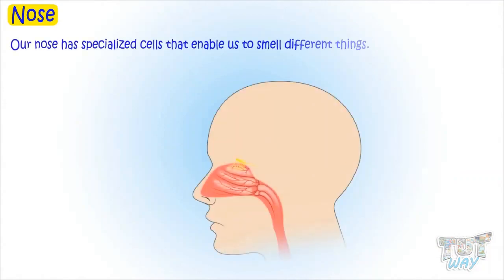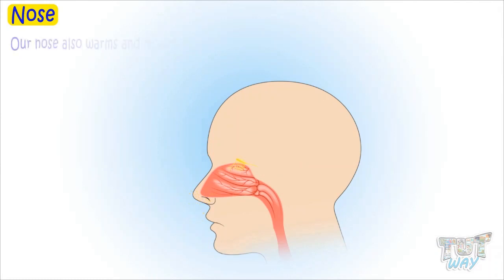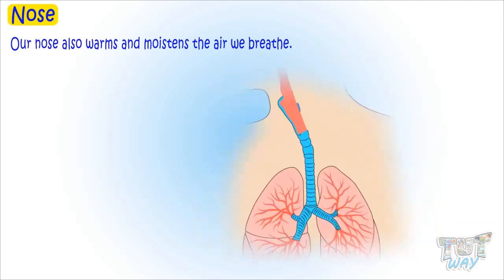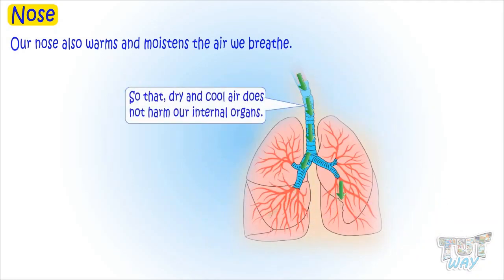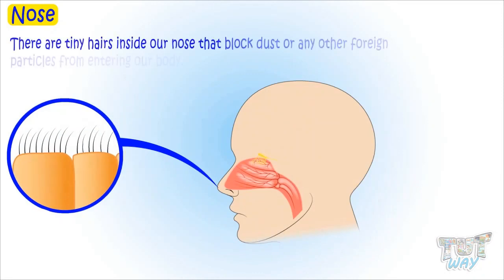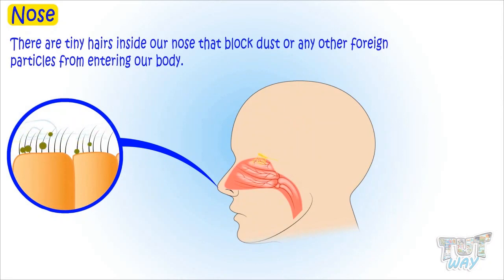Let's start with our nose. Our nose has specialized cells that enable us to smell different things. Our nose also warms and moistens the air we breathe, so that dry and cool air does not harm our internal organs. There are tiny hairs inside our nose that block any dust particles or foreign particles from entering our body.